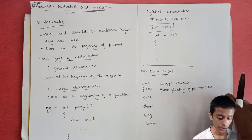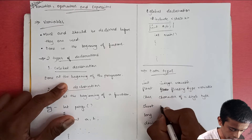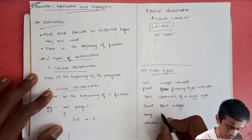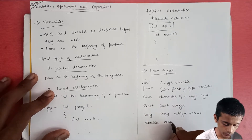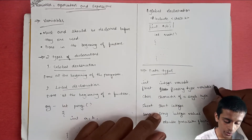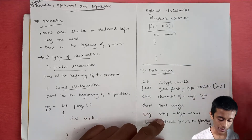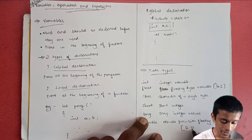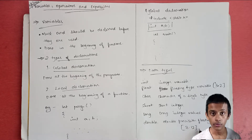'char' is for a character of a single byte. 'short' stands for short integer — an integer that is short. 'long' stands for long integer values. 'double' is for double precision floating point — in float you get single precision, so numbers like 3.2 or 3.4, but for double you can get numbers such as 3.12, with two digits after the decimal point — that is what they mean by double precision floating point.